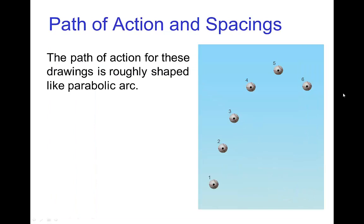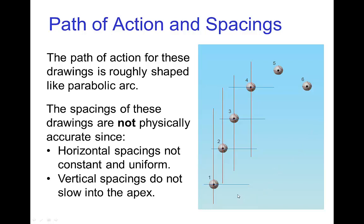Now one last thing, the shape of the path of action could be more or less correct, but that doesn't mean that the timing and spacing is correct. So in this illustration, we see the path of action looks roughly like a parabolic arc, but when we check the spacings, we see that the horizontal spacings are not uniform. In fact, the ball is slowing out towards the right. And the vertical spacings, which should be slowing in as the ball is rising, are actually rather uniform. So this is an example where the shape of the path of action is more or less okay, but the spacings are not correct, or at least not physically believable.